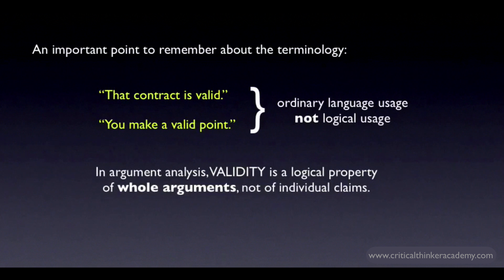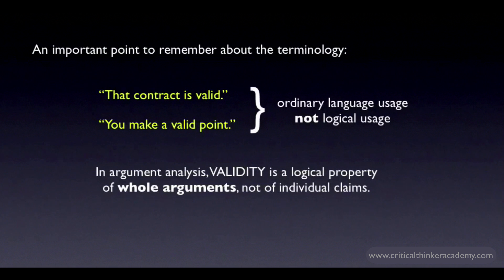When we use the terms valid and invalid in logic, we're talking about properties of whole arguments, not of individual claims. It makes no sense to say that an individual premise or claim is valid or invalid. Validity is a property that describes the logical relationship between premises and conclusions — it's a feature of arguments taken as a whole. It's very common for students new to logic to confuse the various senses of valid and invalid, and make the mistake of describing a premise as invalid when what they mean is simply that it's false or dubious. If you keep the logical definition clear in your mind, you shouldn't have a problem.